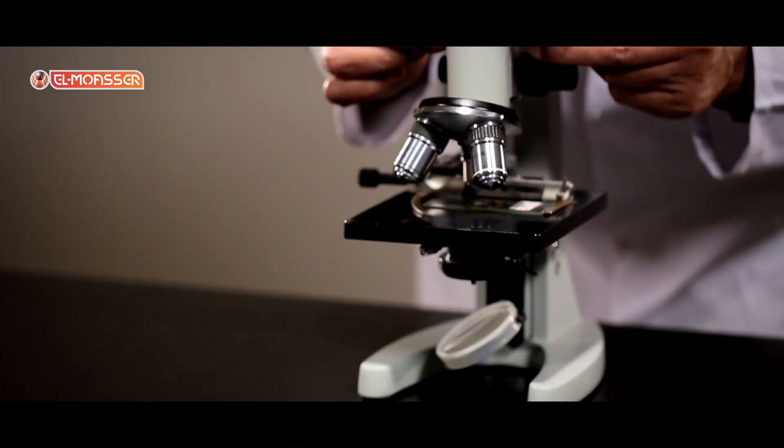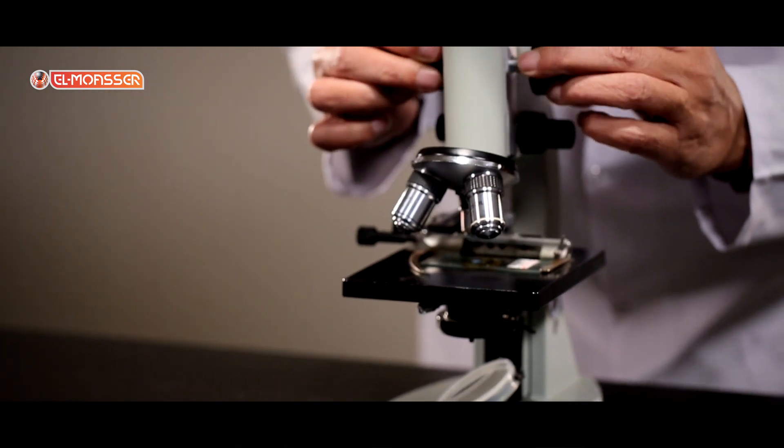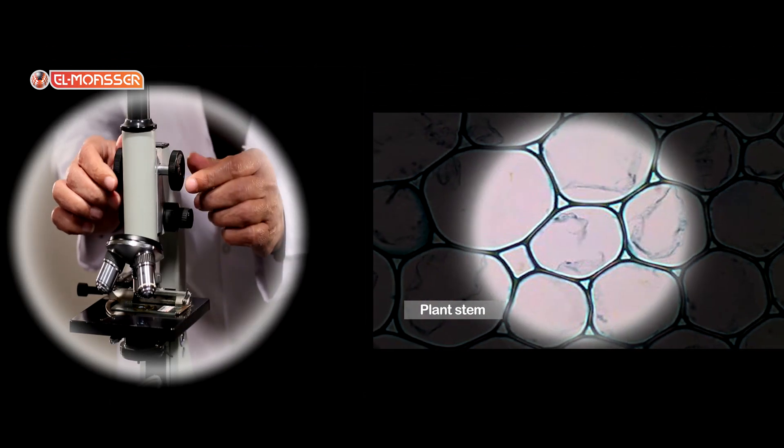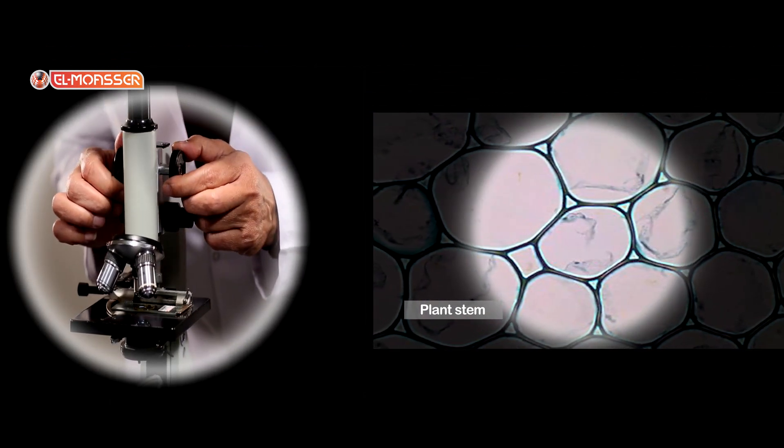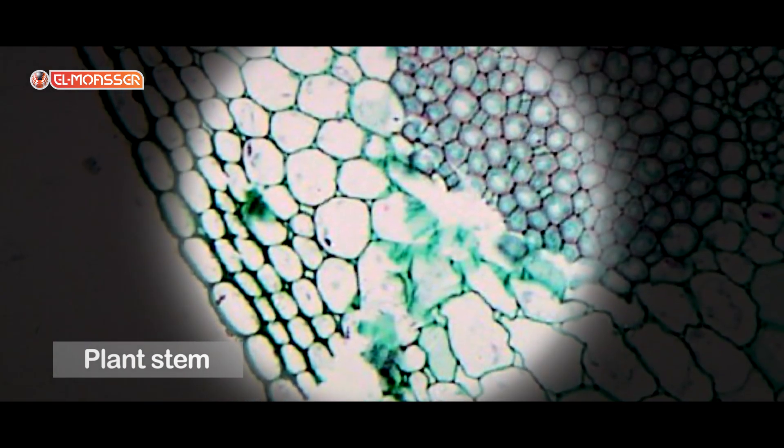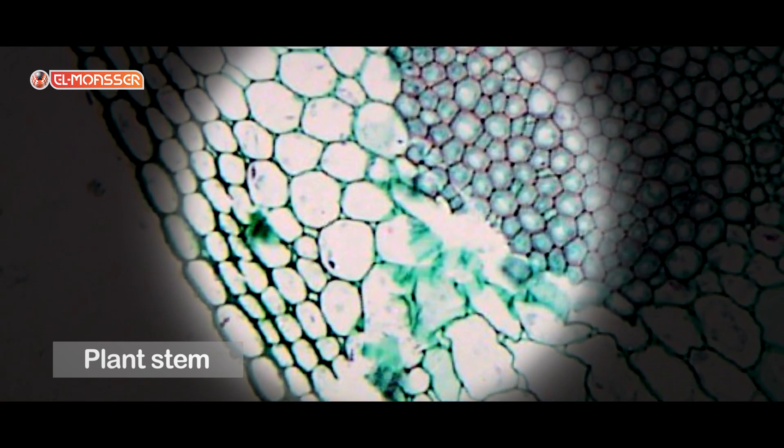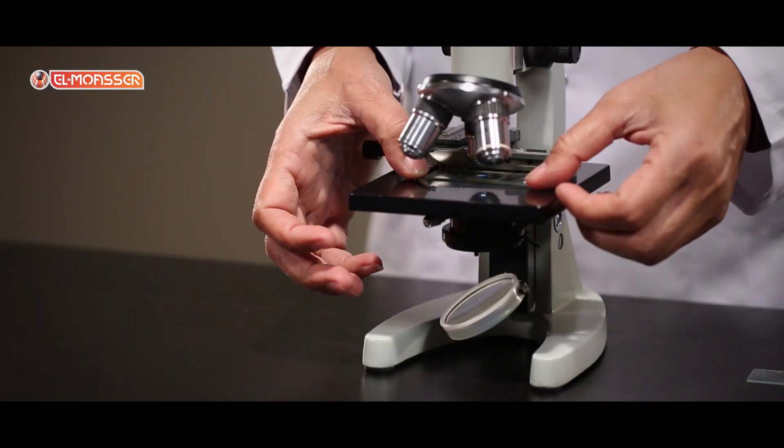Move the coarse adjustment to get the clearest possible image. The first section is of a plant stem. Observe there are a group of parenchyma cells and colenchyma cells. These are from the type of plant cells.